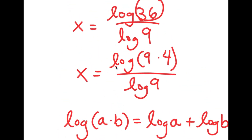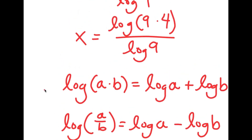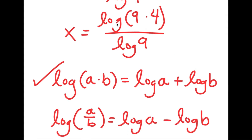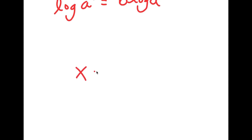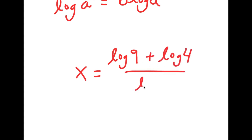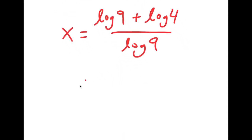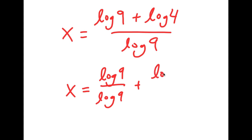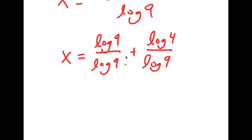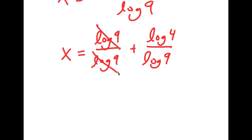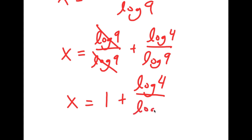Going back to our problem, we have x is equal to log of 9 times 4 over log 9. We can use our first property — log a times b equals log a plus log b — on log of 9 times 4. So now we get x is equal to log 9 plus log 4, all over log 9. I'm going to rewrite this fraction as log 9 over log 9 plus log 4 over log 9. Anything divided by itself is 1, so log 9 over log 9 cancels, and I get x is equal to 1 plus log 4 over log 9.